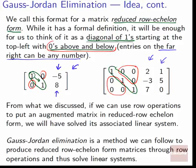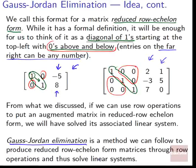Gauss-Jordan elimination — named after its creators — is a method to produce reduced row echelon form matrices through row operations, and thus solve linear systems. It's a method for getting zeros to show up, ones on the diagonal, and then we're done.